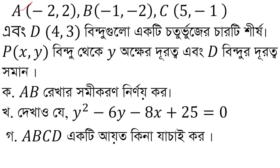Point A has coordinates minus 2, 2. Point B has coordinates minus 1, minus 2. Point C has coordinates 5, minus 1. And point D has coordinates 4, 3.